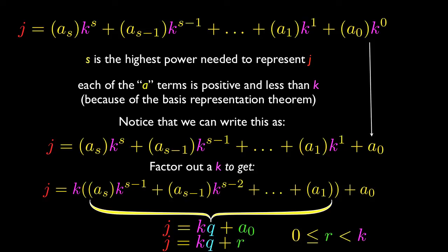And it also obeys the rule that we need, that r is between 0 and k, because the basis representation theorem means that any of the A values has to be less than k, and is positive. So this basically means that q and r exist. We found a q and an r given a j and a k. And so the major part of our work is done at this point.